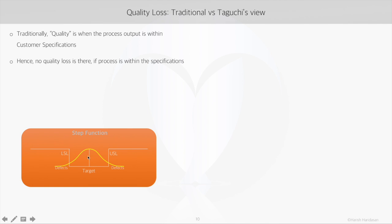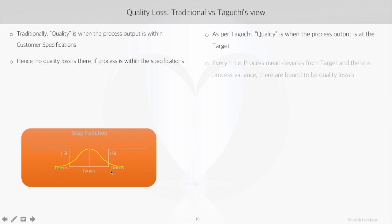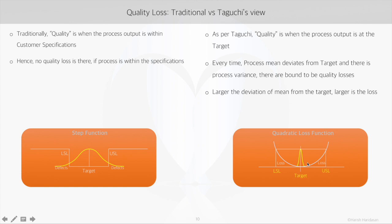It's important to understand how the core belief of Taguchi's designs differs from traditional design methods. Traditionally, we believe that when the process output is within the specs, the process is capable of meeting customer requirements, and only when it deviates beyond the specs do defects occur and the customer is impacted. But in Taguchi's designs, quality means the process output is at the target. Every time the process mean deviates from the target and there is variance in the process, quality loss will occur. That's why Taguchi's method follows an approach that minimizes the impact of variation on response, neutralizes the impact of noise, and ensures the process mean is at the target.